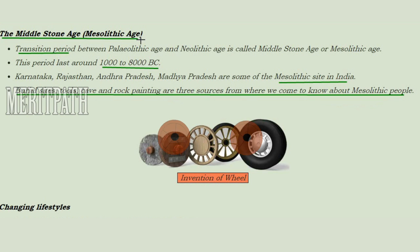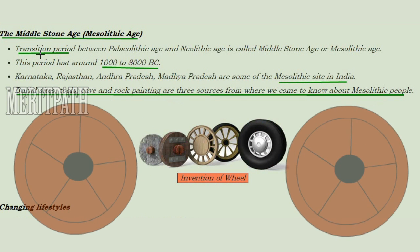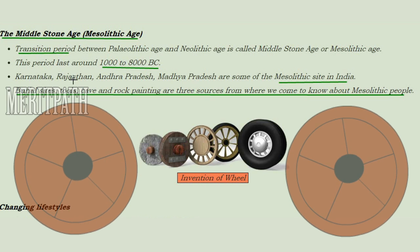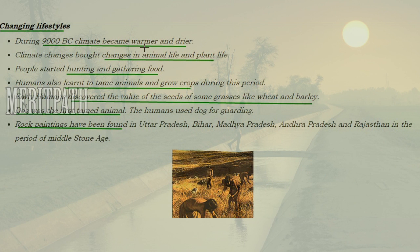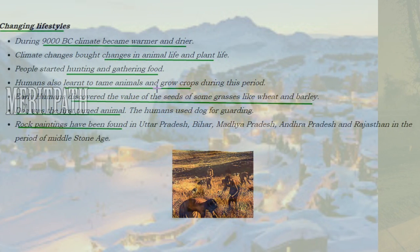The Middle Stone Age, or Mesolithic Age, is the transition period between the Old and New Stone Ages. This period lasted from 10,000 to 8,000 BC. In India, evidence of the Mesolithic Age has been found in Karnataka, Rajasthan, Andhra Pradesh, and Madhya Pradesh. We know about this period through burial sites, tools, caves, and rock paintings. The invention of the wheel was an important feature. The climate became warmer and drier, causing changes in animal and plant life.